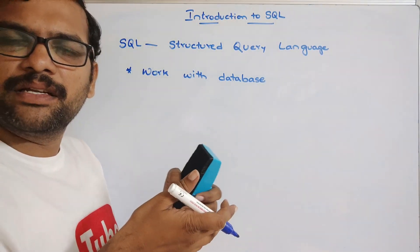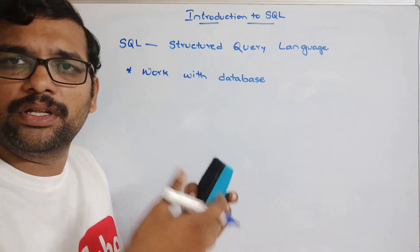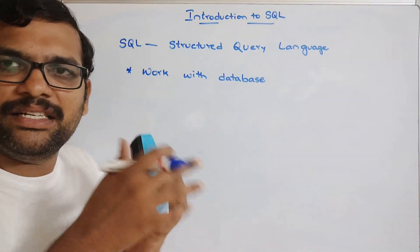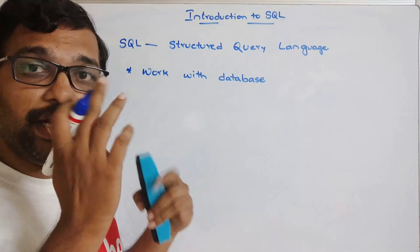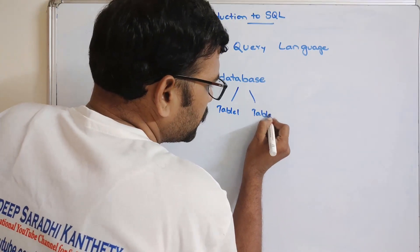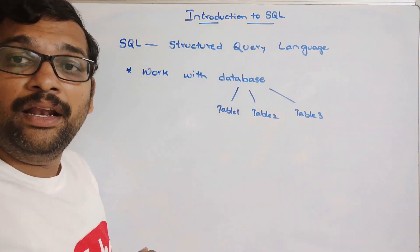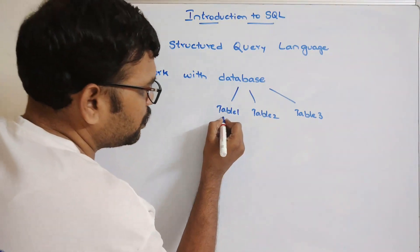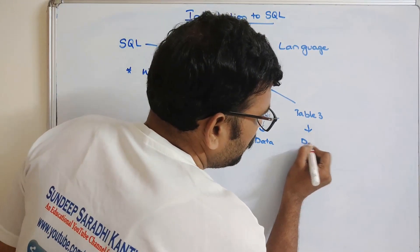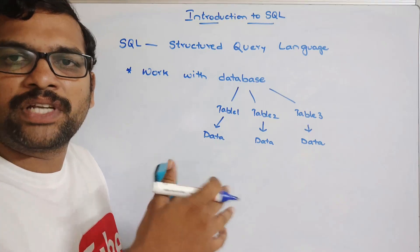A database is a collection of tables if it is a relational database. We have already recorded a video about the different types of databases — the link will be in the description. In a relational database, data is stored in tables. A single database can have many tables — table 1, table 2, table 3, etc. Each table holds data in terms of rows and columns.